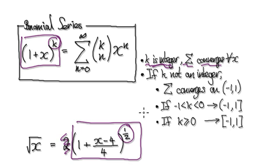But if k is not an integer, you either go here or you go here. So if k is not an integer, k is a half in our case.